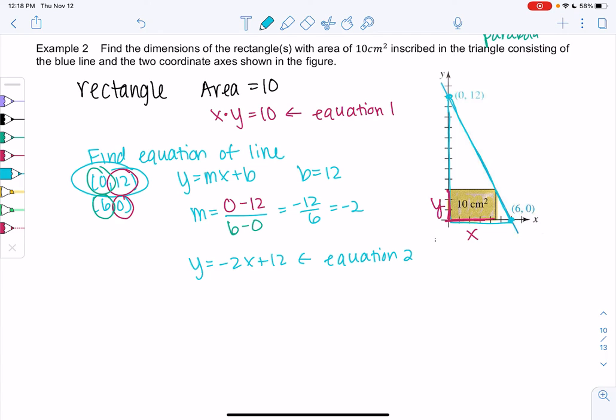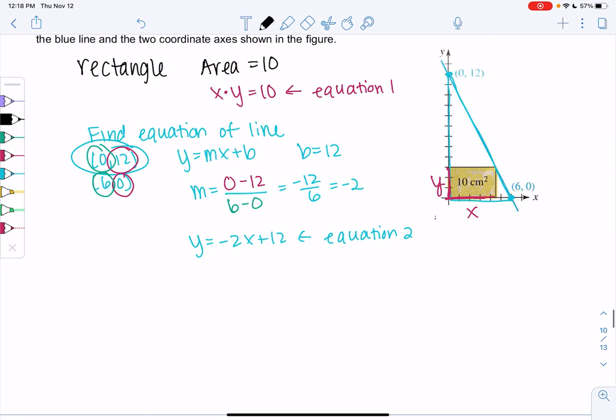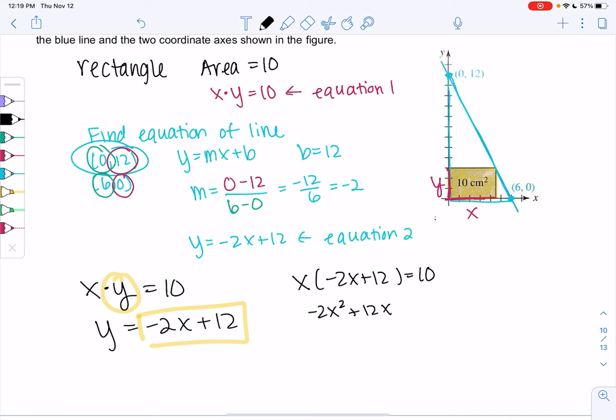And so now we have a system. And so we can probably do a substitution. So I know y is negative 2x plus 12. I think I'll substitute that into x times y equals 10. So x times negative 2x plus 12 equals 10. So negative 2x squared plus 12x equals 10.